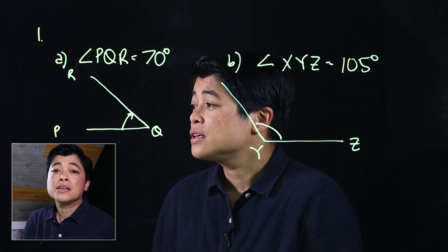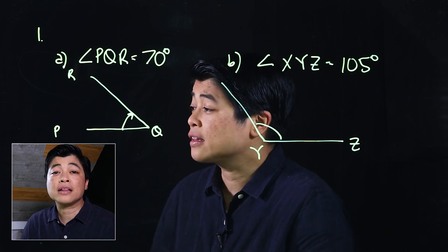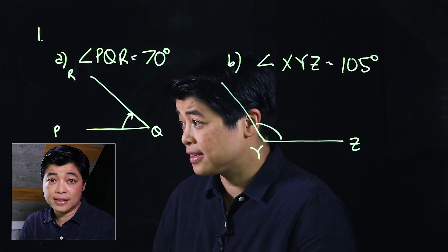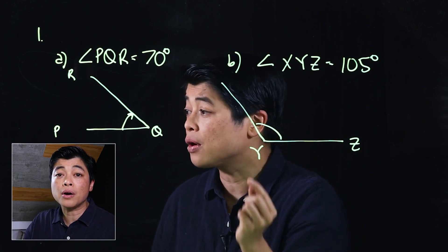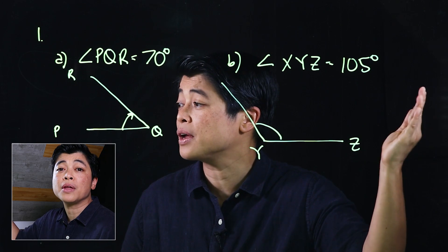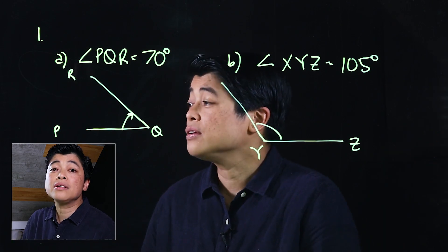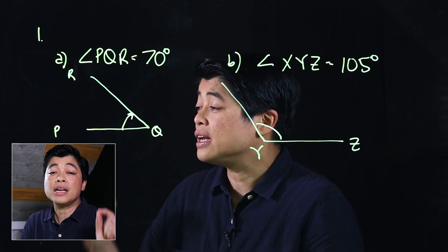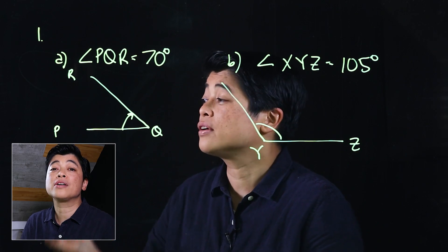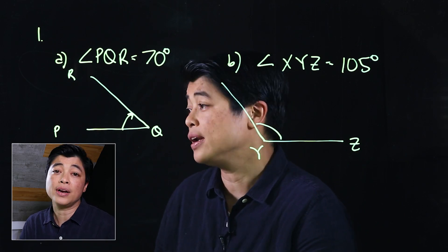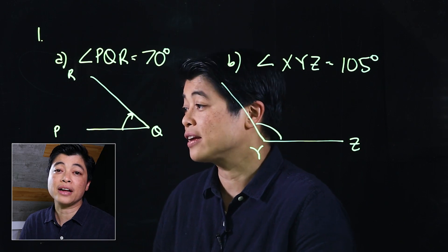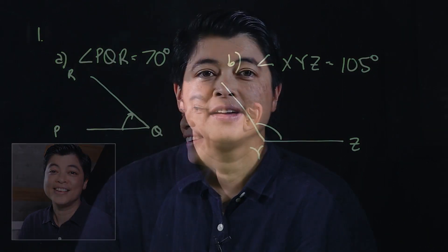Every protractor is different. Depending on the protractor you have, you may be reading from the top or bottom, whether starting from the right or left hand side. Please be careful and look at your protractor carefully. That concludes lesson one of chapter five — see you in the next lesson.